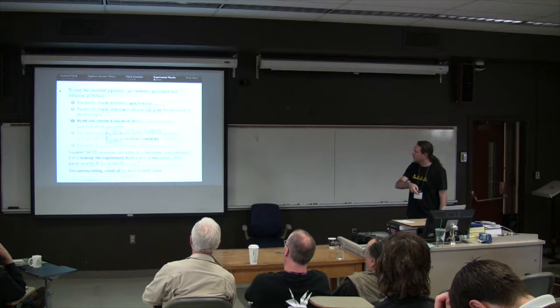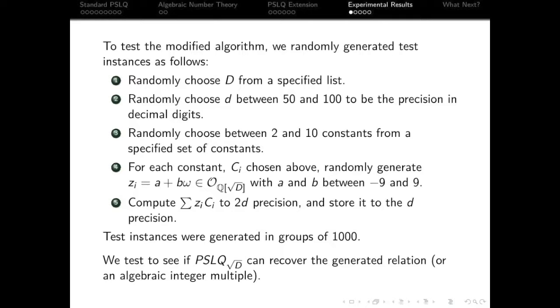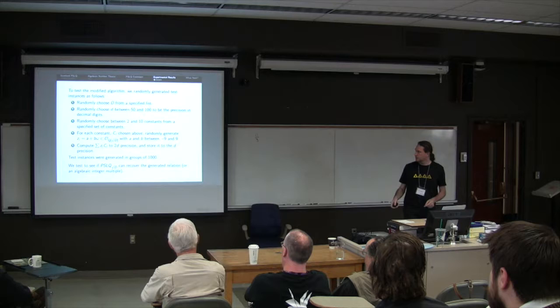So this is an experimental math conference last I checked. I should have some experimentation. I'm running up on time, so I'm going to have to breeze through this. I randomly generated a whole bunch of cases. I randomly generated the adjoints. I randomly generated how many constants we were going to have. I randomly generated the algebraic integers for the constants. I calculated an integer combination and I spat a linear relation out.